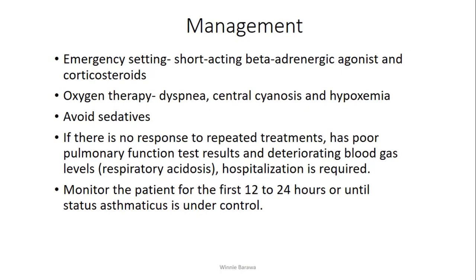How do we manage status asthmaticus? In an emergency setting, there will be administration of short-acting beta-adrenergic agonists and corticosteroids, because you want to handle the triggers initiating the inflammatory process. Beta-adrenergic agonists are the best for this case. Then there is oxygen therapy — the patient is showing signs of dyspnea, central cyanosis, and even hypoxemia, so put the patient on oxygen and monitor. Avoid sedatives, because this patient is already struggling to breathe, and sedatives cause respiratory depression.